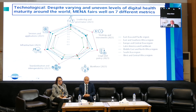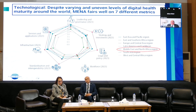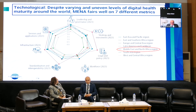In MENA, despite varying levels of digital health maturity around the world, MENA actually fares well on seven different metrics. This spider chart has seven metrics reflecting digital health maturity, and MENA — represented by the dark blue line — fares relatively well compared to Eastern and Southern Africa, Latin America, South Asia, and Western Central Africa. So we're not in a bad shape, but there is a lot that can be done.